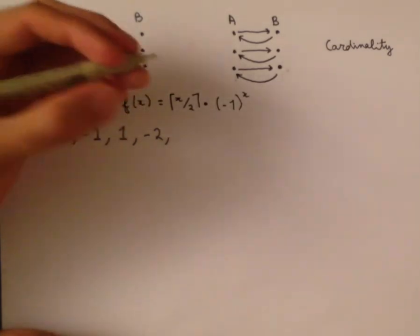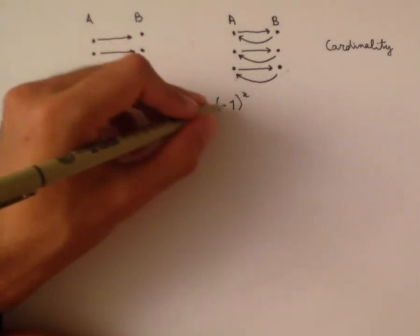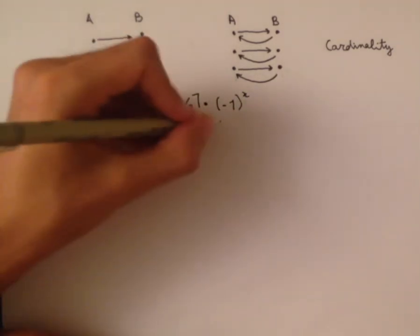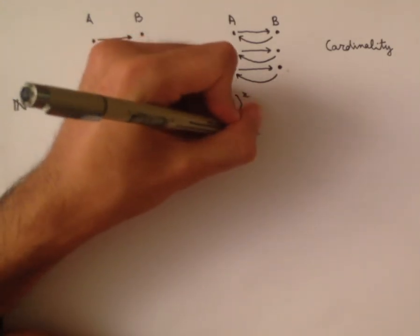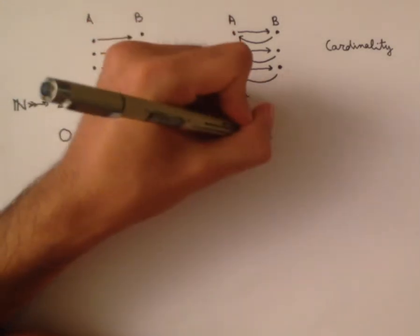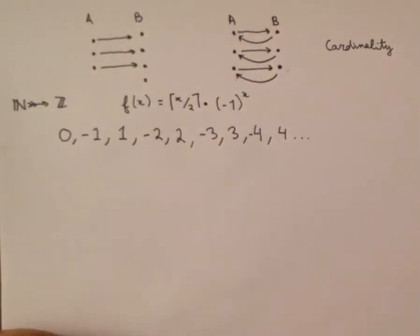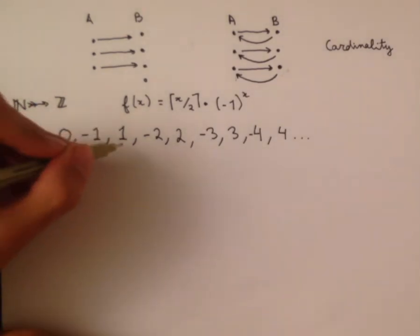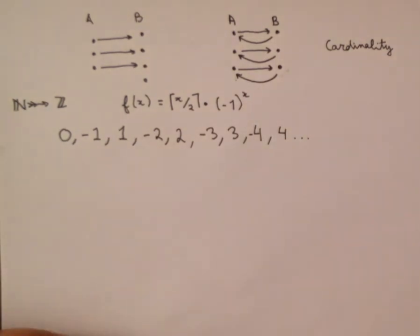After that, f(4) gives us the ceiling of 4/2, which is 2, and since the exponent is even it's positive, so we get 2. If we keep going like this you'll start to see the pattern — first we have the negative version, then the positive version, and we just keep zigzagging back and forth like that, and we can list all the integers that way.